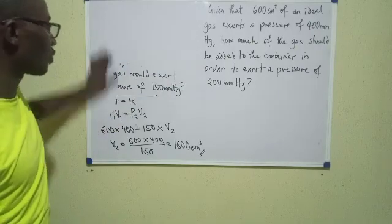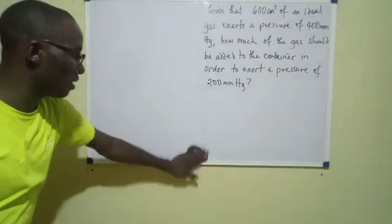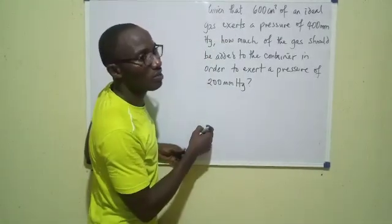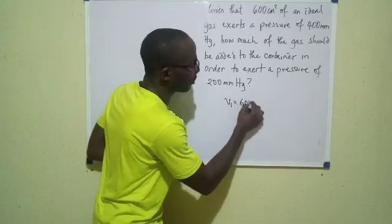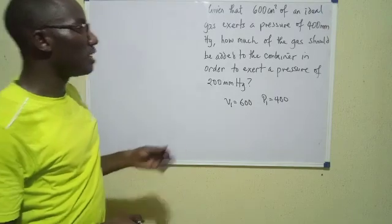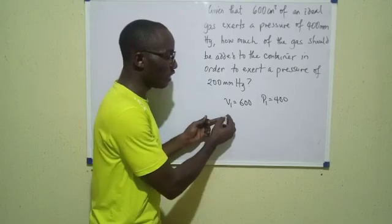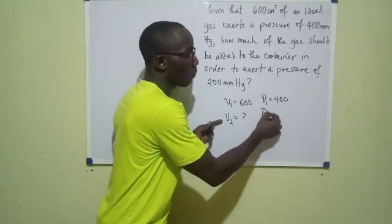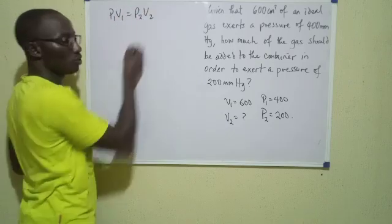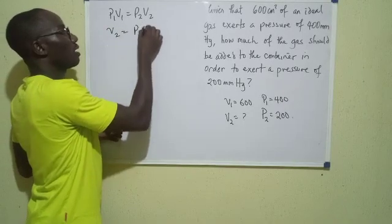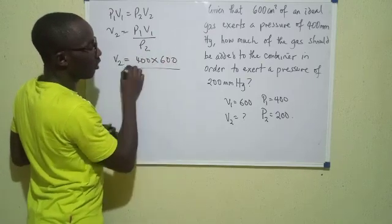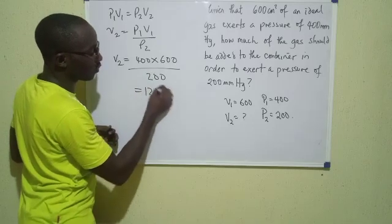If you don't solve this next question carefully, you may fail it. We are told that at first there were 600 cm³ of the ideal gas, so V₁ equals 600, and it exerted a pressure P₁ of 400. Now it asks: how much gas should be added to the container to get a new pressure P₂ of 200? Using P₁V₁ equals P₂V₂, V₂ equals P₁V₁ over P₂, so V₂ equals 400 times 600 over 200, giving 1,200 cm³.